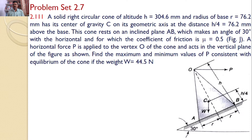Find the maximum and minimum values of P consistent with the equilibrium of the cone if the weight W is 44.5 N. That means it is a cone resting on an inclined plane which makes an angle of 30 degrees. A horizontal force P is applied in this direction. What are the minimum and maximum values of P so that it maintains equilibrium?